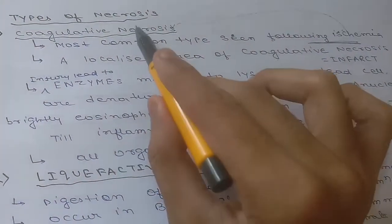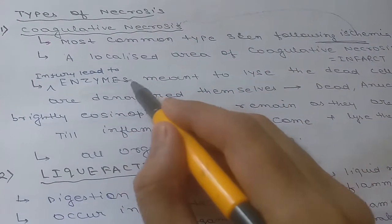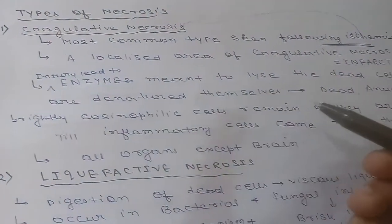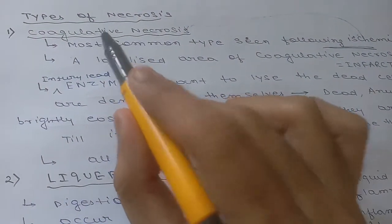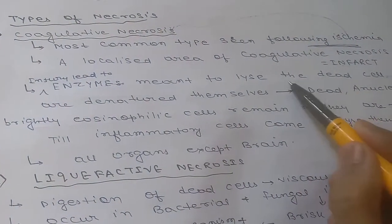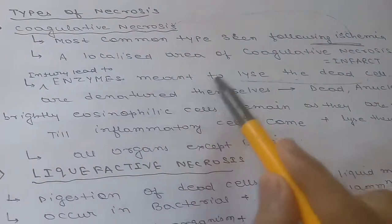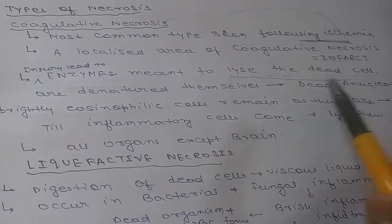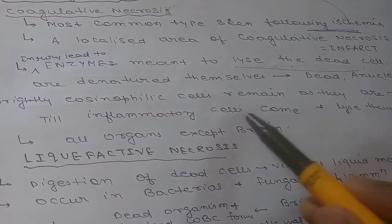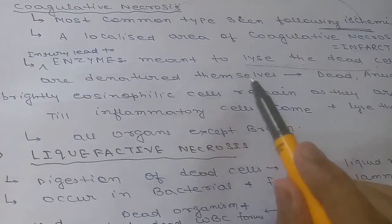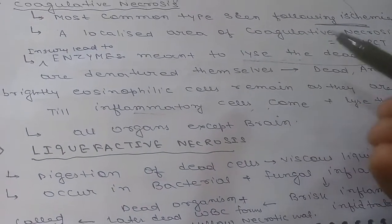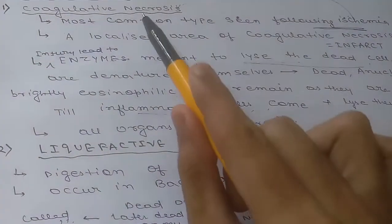In coagulative necrosis, cell injury leads to denaturation of the enzymes responsible for lysing the dead cell. So the enzymes meant to lyse the dead cell are themselves denatured. The dead eosinophilic cells remain as they are until inflammatory cells come and lyse them. Inflammatory cells will come and phagocytize or lyse those cells. Coagulative necrosis is seen in all organs except the brain.